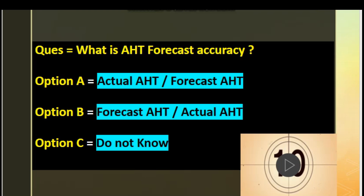I have provided answers along with the questions. The first question is: what is HD forecast accuracy? Option A: actual HD divided by forecast HD. Option B: forecast HD divided by actual HD. Option C: do not know.